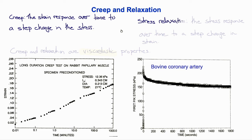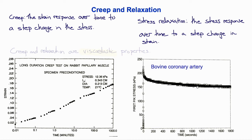The converse experiment is stress relaxation — the stress response over time to a step change in strain. Here we see the stress in a coronary artery subjected to a step in strain. Initially the stress rises, but then rapidly at first and then more slowly, the stress decays or relaxes over the period of the next 20 or 30 minutes. Creep and relaxation are both examples of viscoelastic properties not seen in a purely elastic material, but a viscoelastic material model that includes viscous fluid-like properties can produce creep and relaxation.